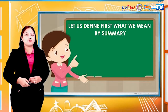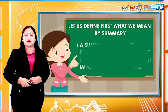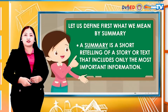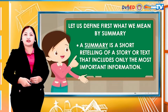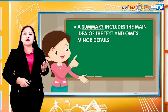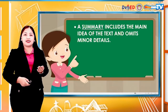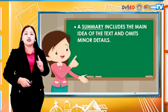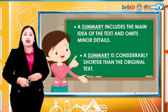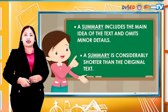First, we have to define what is meant by a summary. A summary is a short retelling of a story or text that includes only the most important information. It also includes the main idea of the text and omits the minor details. A summary is considerably shorter than the original text.